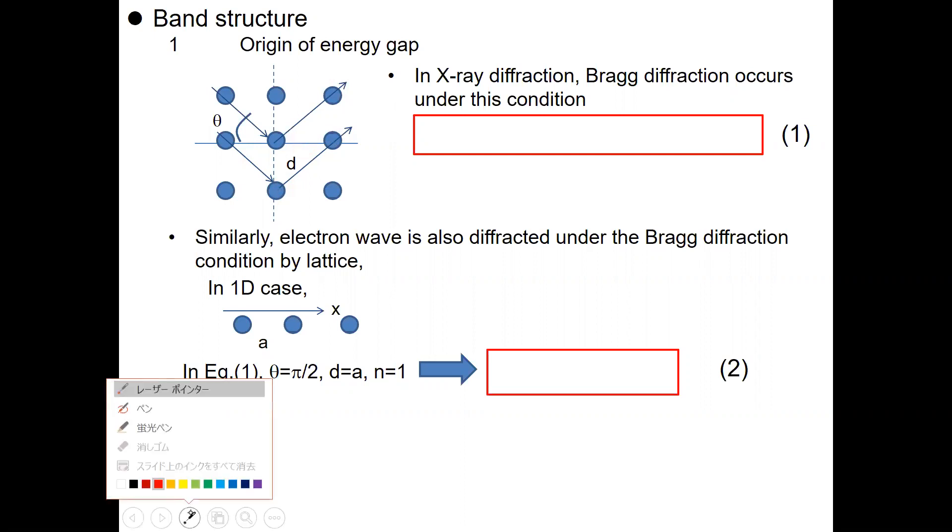Which is 2d sine theta equal some integer times lambda. What this means is that these two distances correspond to 2d sine theta. This condition indicates that this wave and this wave interfere to increase its intensity.